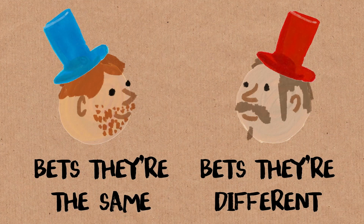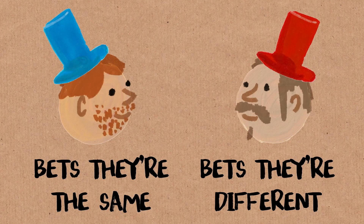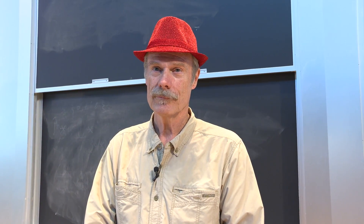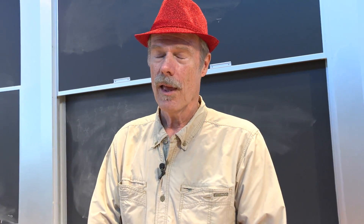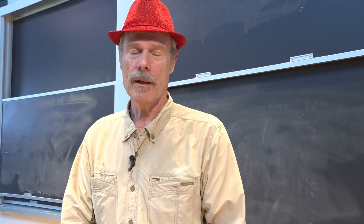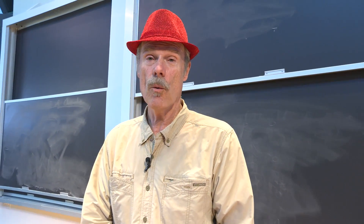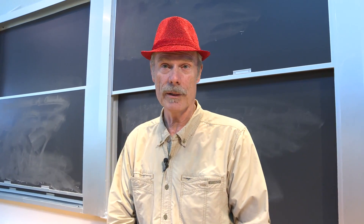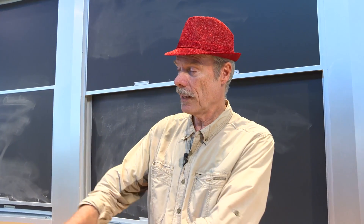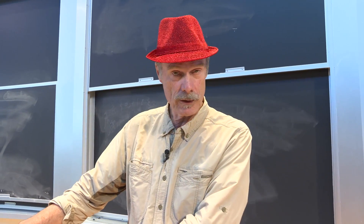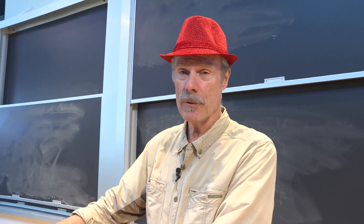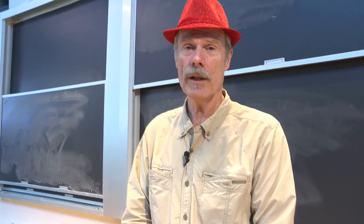What if the rules had been that we both have to be right? Could we have had a winning strategy then? If we both have to be right, there is just no way we can do it. So there's something about this particular set of rules that enables this magic trick.